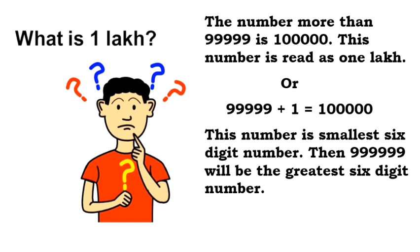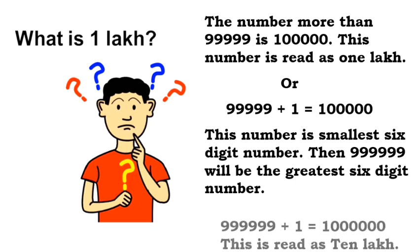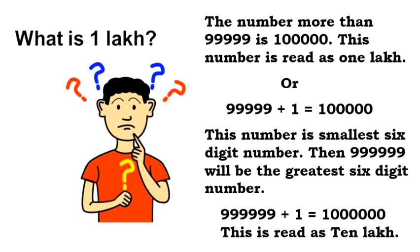Then 999999 will be the greatest 6 digit number. 999999 plus 1 will give us 1 followed by 6 zeros. This is read as 10 lakh.